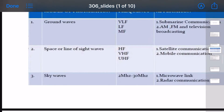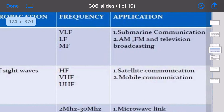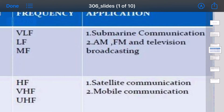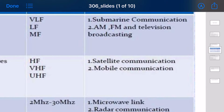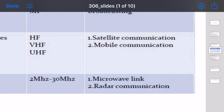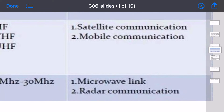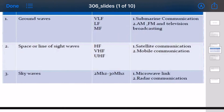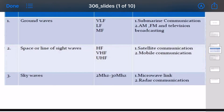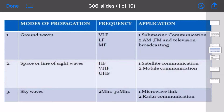The applications are different for each method. Ground wave propagation is used for submarine communication, AM and FM broadcasting, and television broadcasting. Space wave propagation is used for satellite communication and mobile communication. Sky wave propagation is used for microwave links and radar communication.